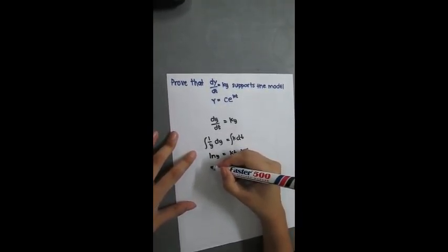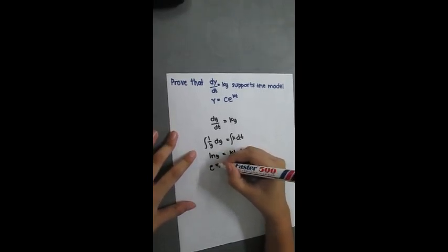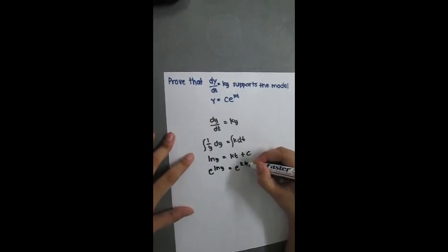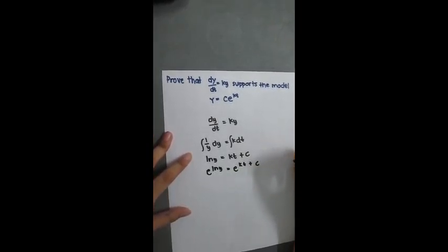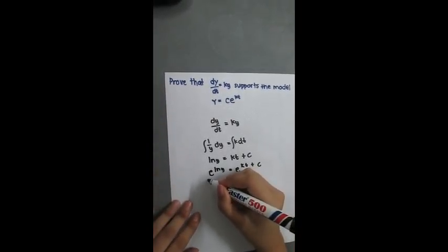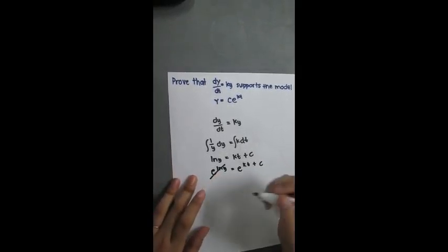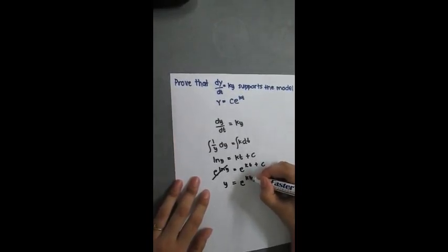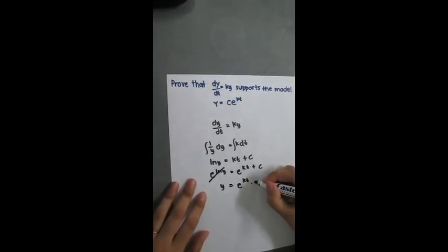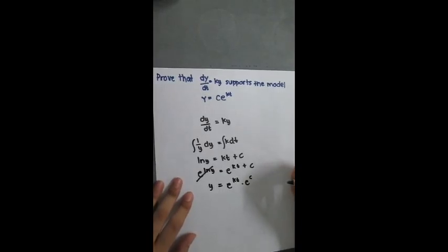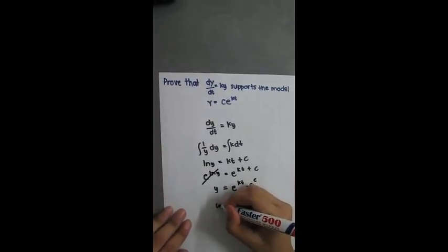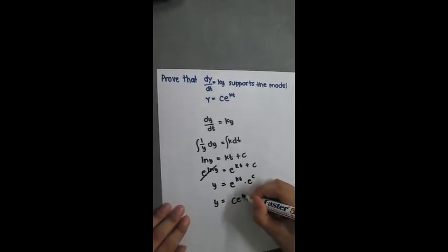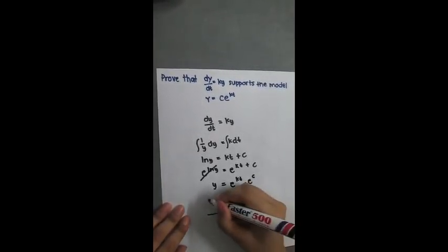Then by exponentiation, e raised to ln of y equals e raised to kt plus c. We can cancel the exponential and ln, giving y equals e raised to kt times e raised to c. Therefore y equals c times e raised to kt. This is our final answer.